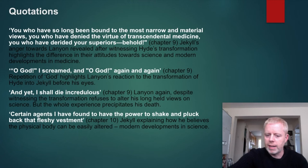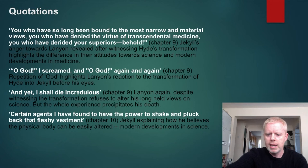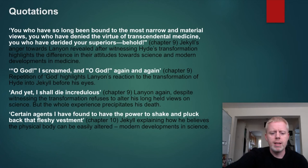In Chapter 10, Jekyll explains how he believes the physical body can be easily altered, reflecting modern developments in science: 'certain agents I have found to have the power to shake and pluck back that fleshy vestment' — in other words, a chemical reaction or combination of elements has allowed him to physically transform into Hyde.